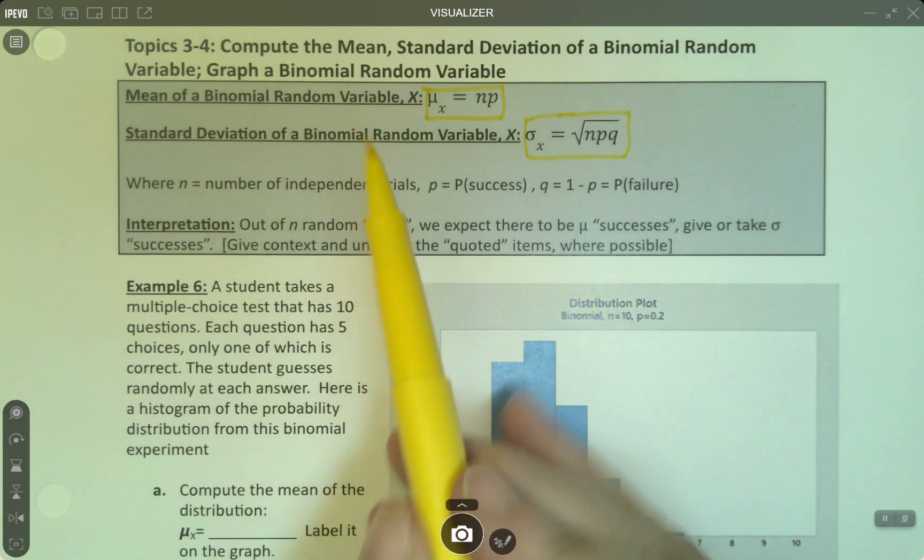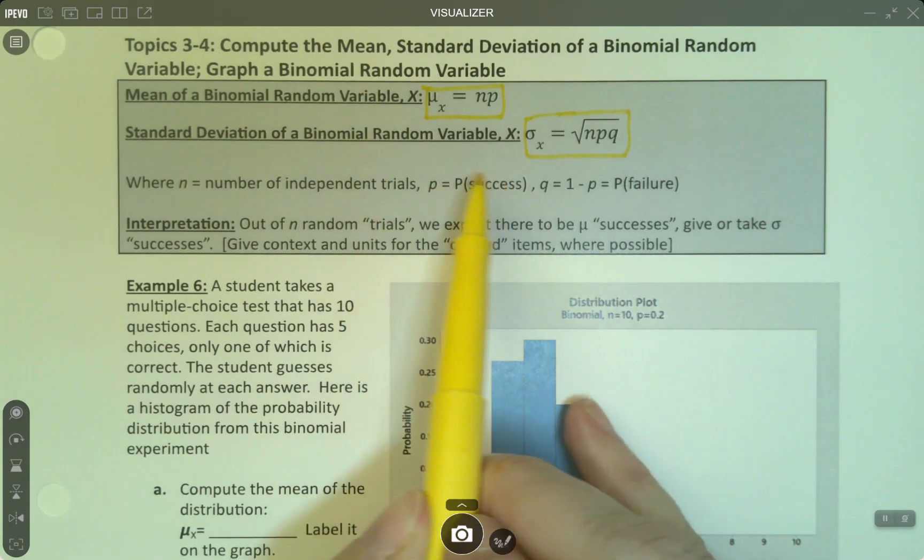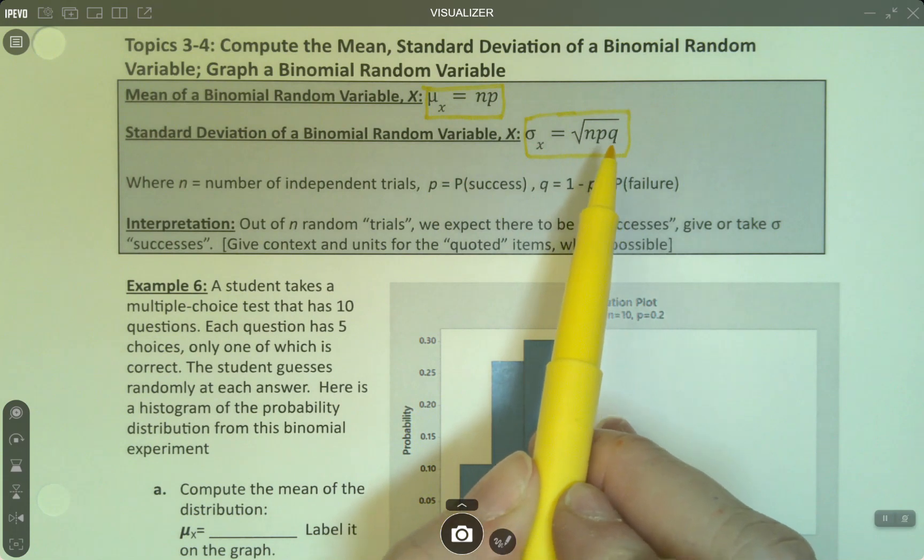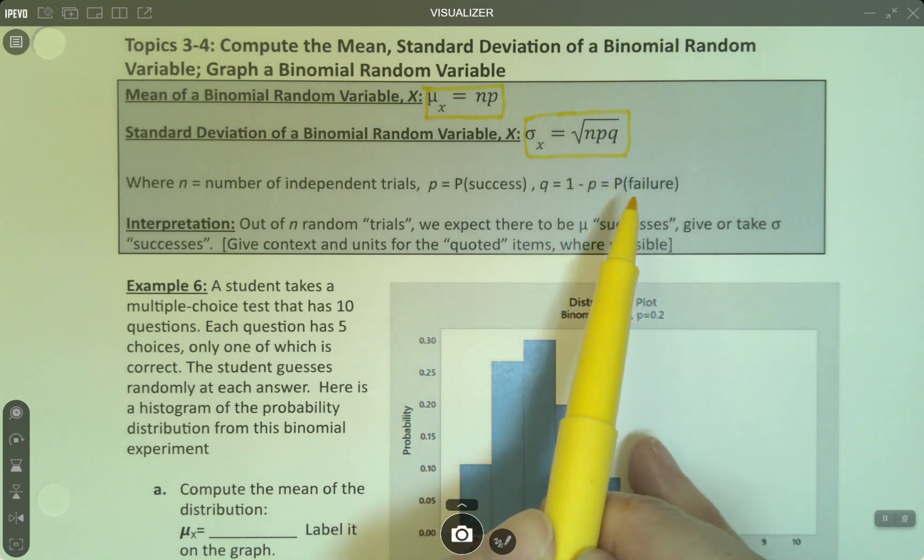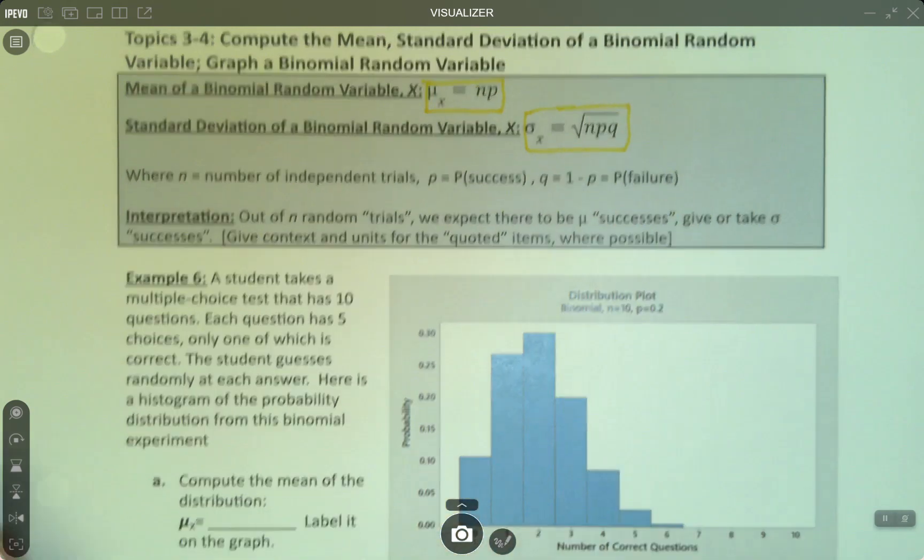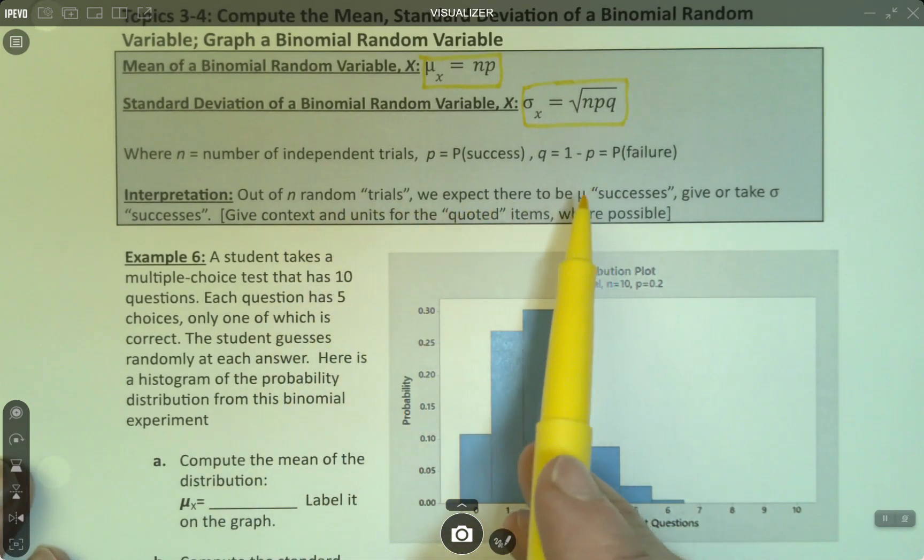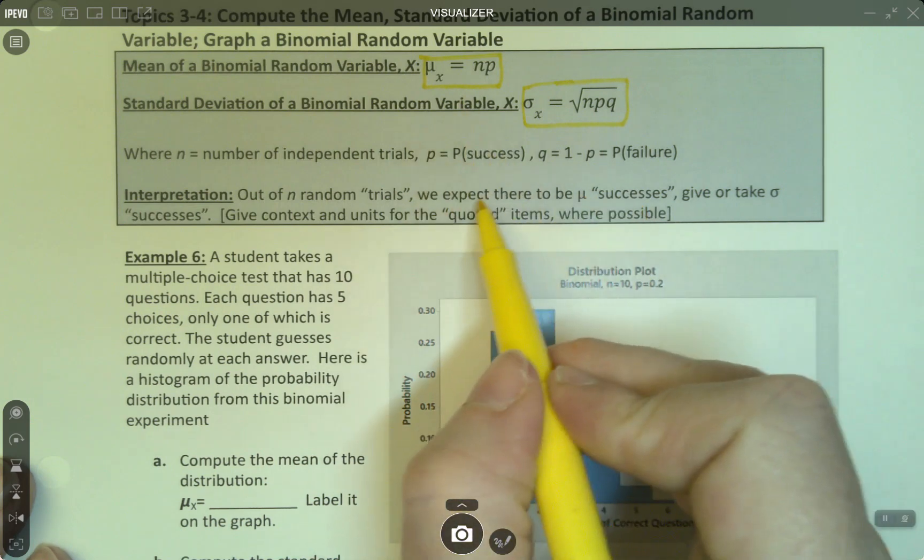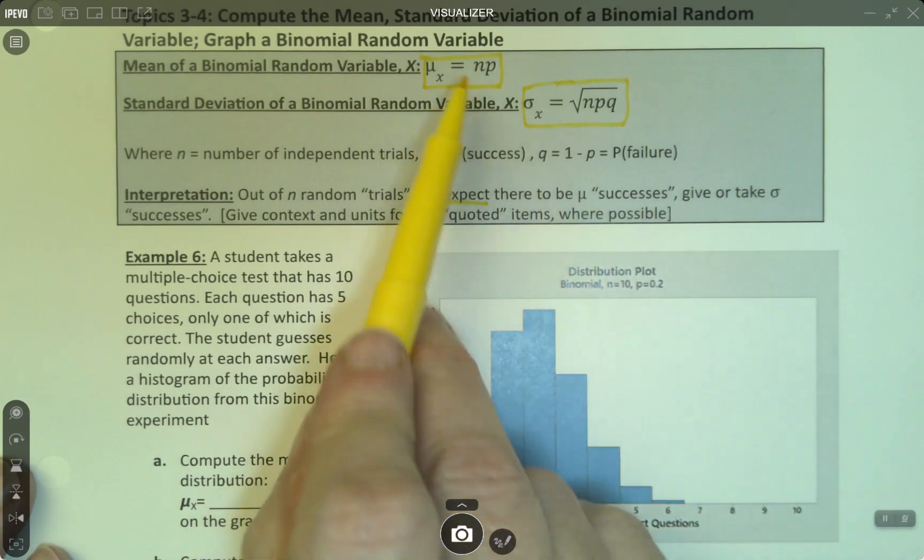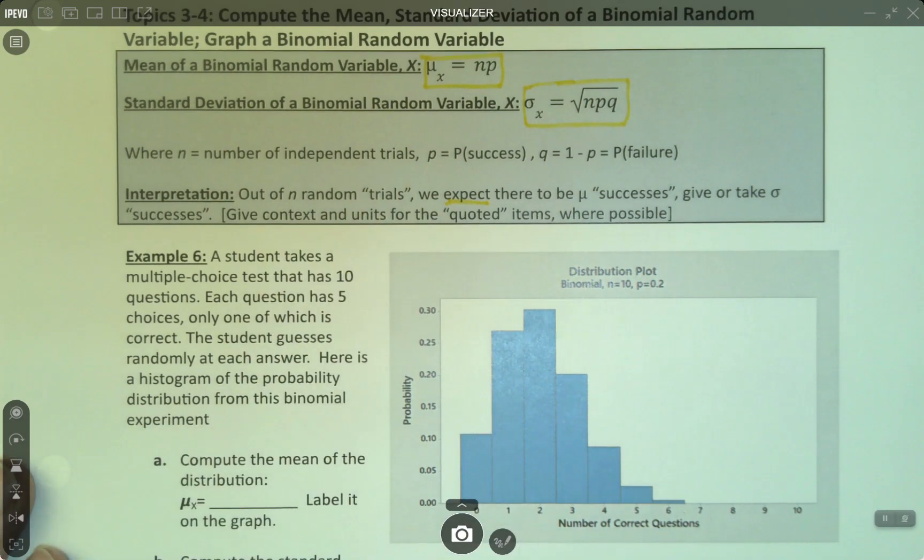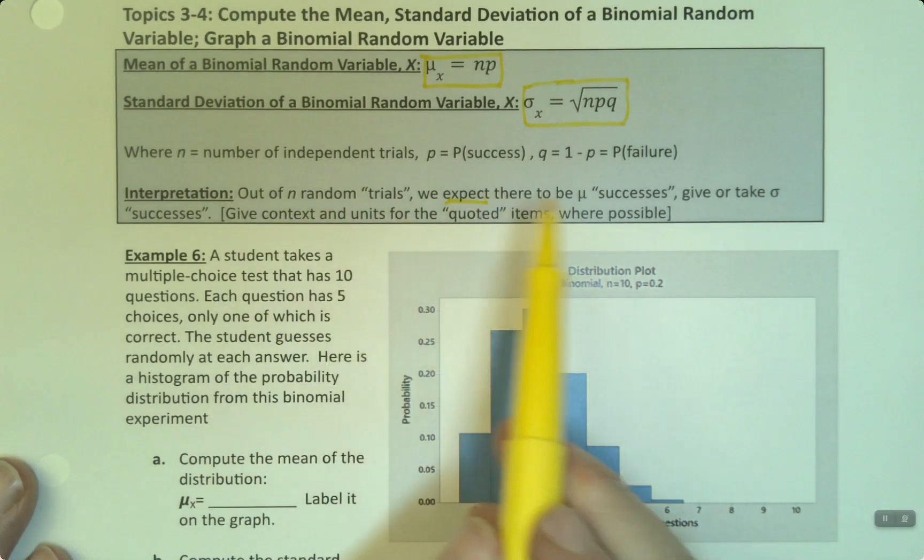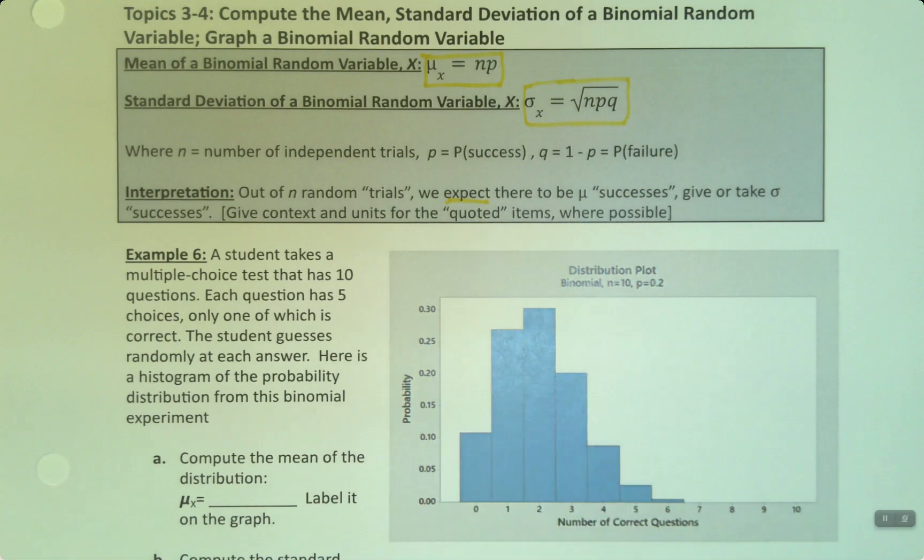Remember that n is our number of trials, p is our probability of success, and q is the probability of failure. And then here's the interpretation: Out of n random trials, we expect there to be the mean number of successes. There's that word expect again, because the mean is your expected value. Give or take the standard deviation successes. And then we would give context and units for all of those pieces.